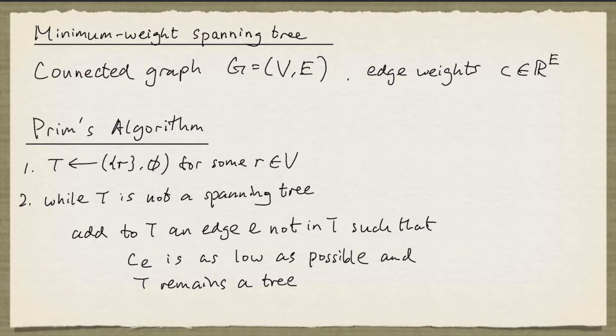We first look at Prim's algorithm. It starts with setting T to be a subgraph of G that consists of a single node with no edges. The node can be any node in the graph. And then we enter into a loop. As long as T is not a spanning tree, we do the following.